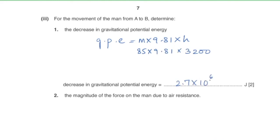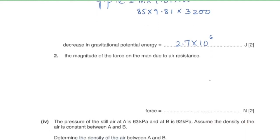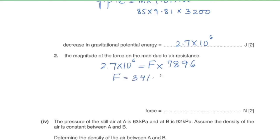Part four: determine the magnitude of the force due to air resistance. Since the man travels with constant velocity, the forward force equals air resistance. Using energy = force × distance: 2.7 × 10⁶ = F × 7896, giving a forward force of approximately 342 newtons. Therefore air resistance also has a magnitude of 342 newtons.